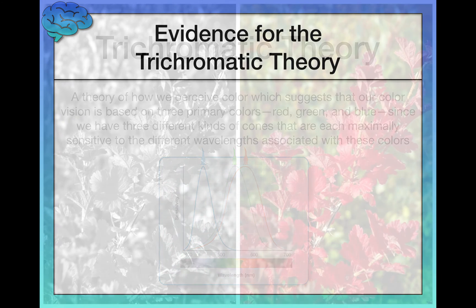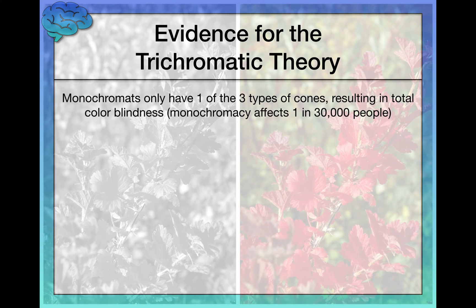What evidence do we have for it? Color blindness is actually a great source of evidence for the trichromatic theory. I'm going to introduce two new terms: monochromats and dichromats. Monochromats are people who only have one out of three different types of functional cones — the others may be non-functional due to some genetic defect. Monochromacy only affects one in 30,000 people, and as I said, it's usually genetic, so if you don't have it already, you probably don't need to worry about it.